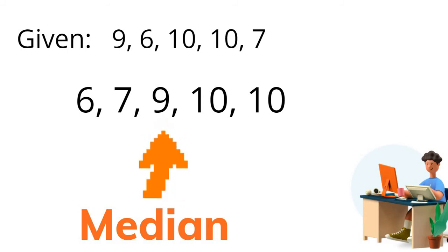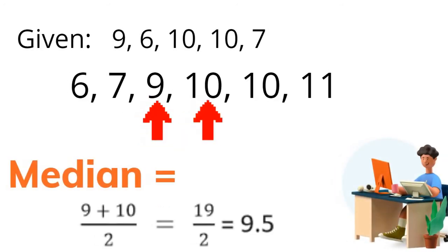And that is the median of the data set. So what if we have given 6 numbers and we have 2 middle most values? We simply find its average. So 9 plus 10 divided by 2 equals 9.5, and that is the median of the given ungrouped data.